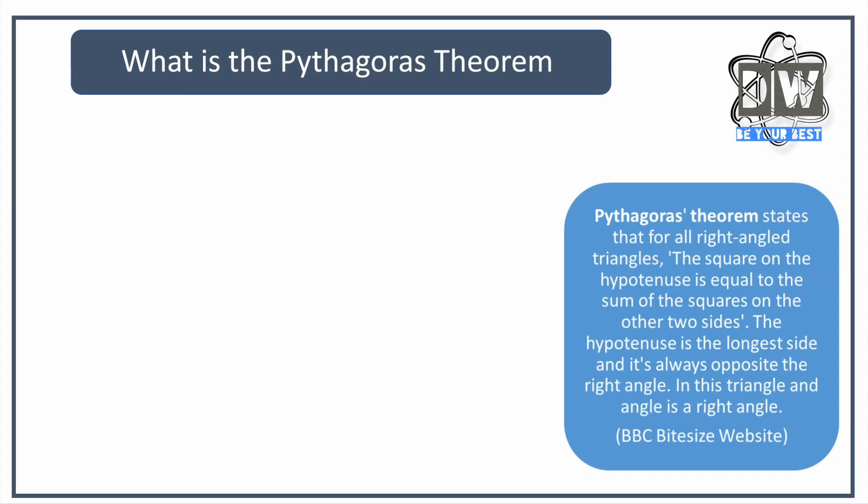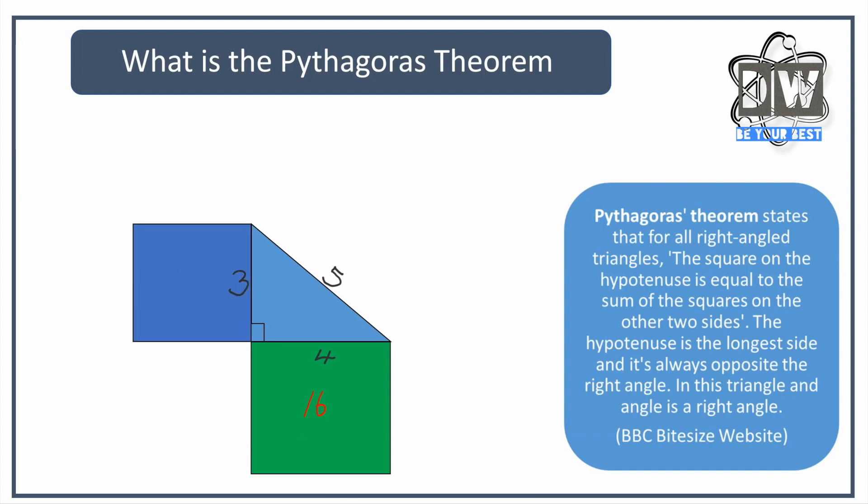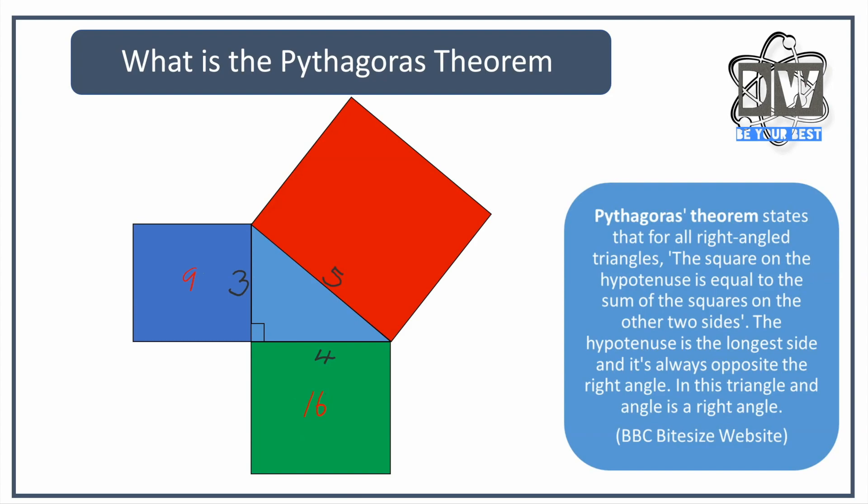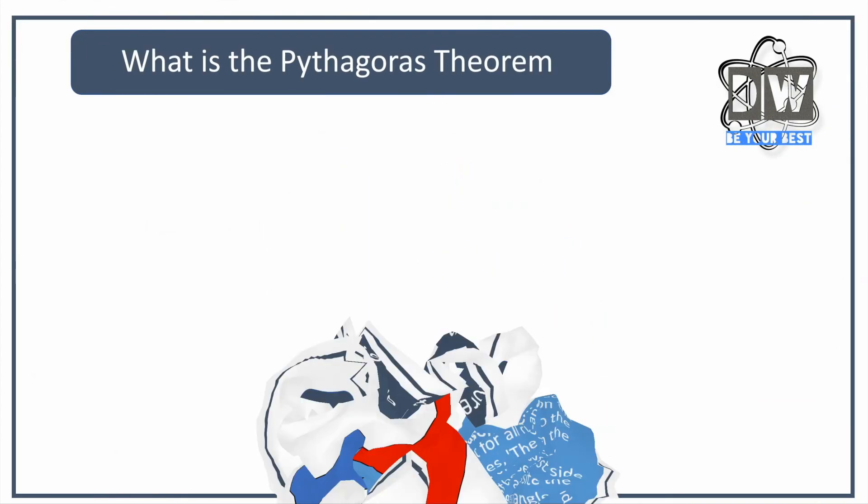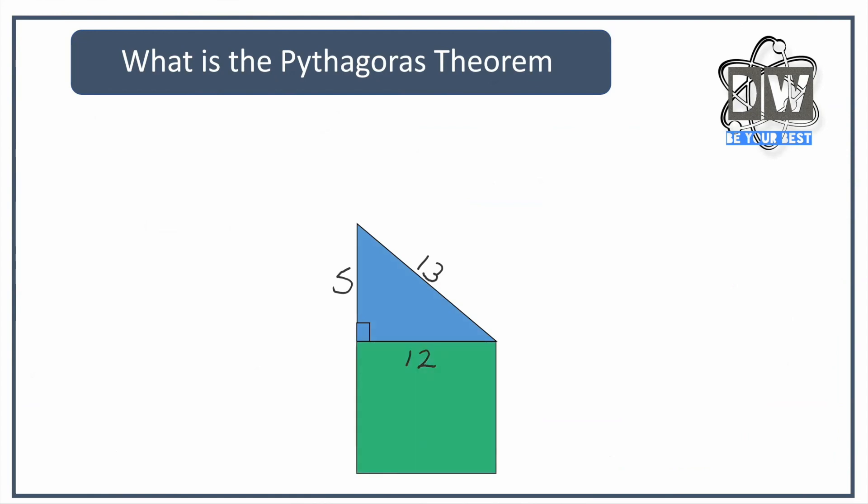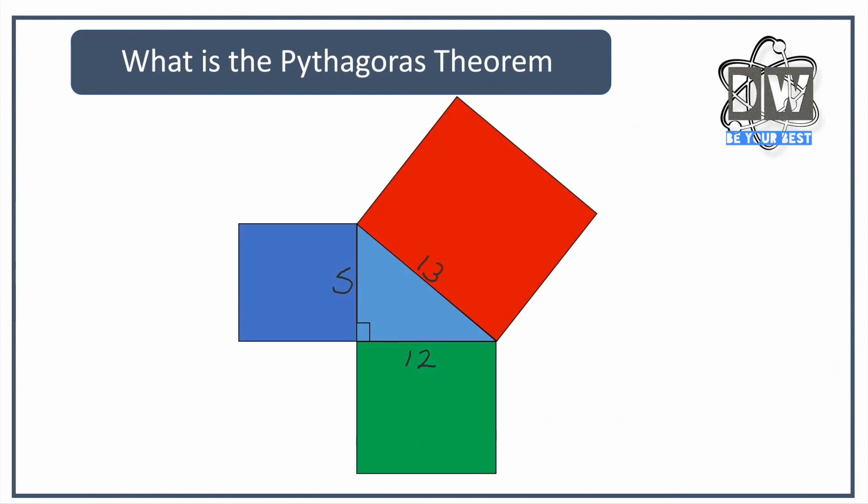We're going to use a little equation to help us answer these questions. Here's an example: we've got 4 squared, which is 16, then we've got 3 squared which is 9. If we add 9 and 16 together that gives us 25, and 5 squared is 25. That's basically how it works.